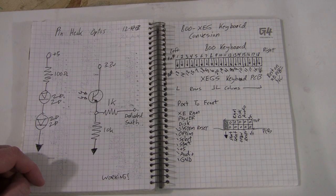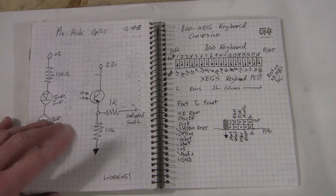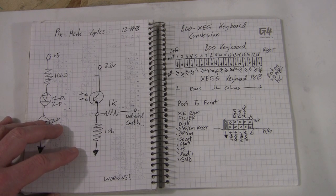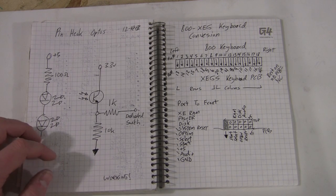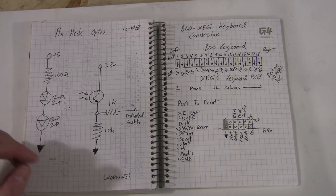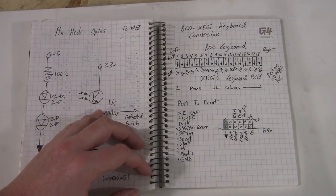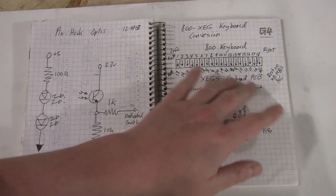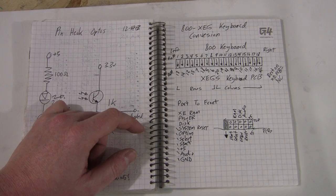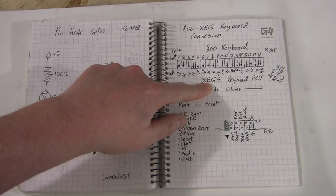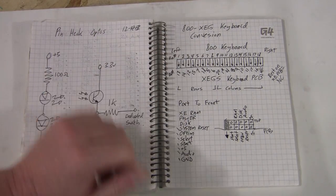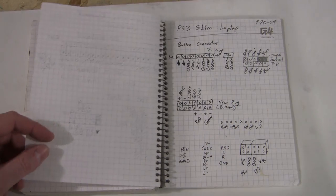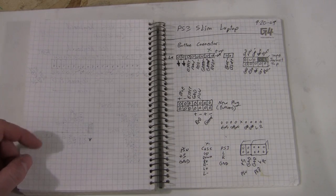XE... Oh yeah, the 800 XEGS keyboard conversion. So when I made my second Atari 800 computer, I really wanted to have the old 1979 model Atari 800 keyboard in it. So I had to basically figure out how to convert the XEGS keyboard PCB to the 800. It was pretty self... well, not self-explanatory but it wasn't too difficult.